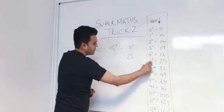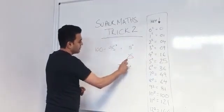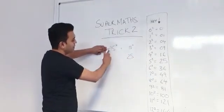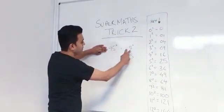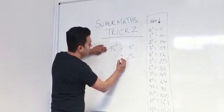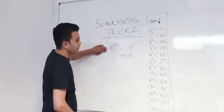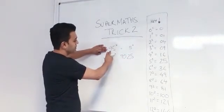So 5 squared is 25. Now 95 take away 5 is 90. 9025 is 95 squared.